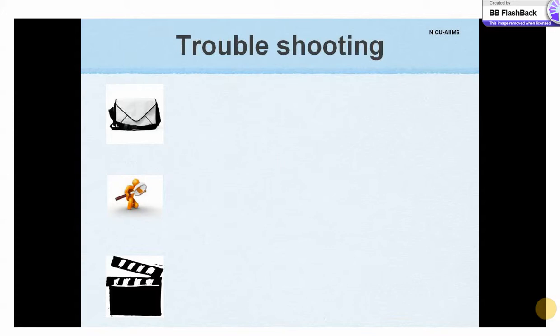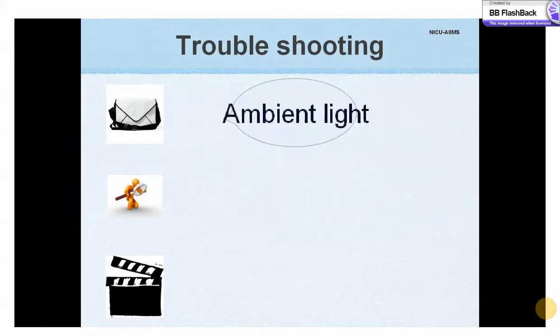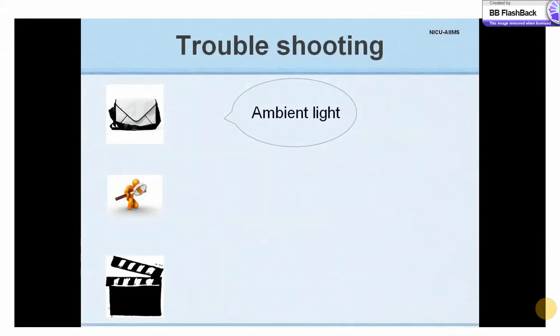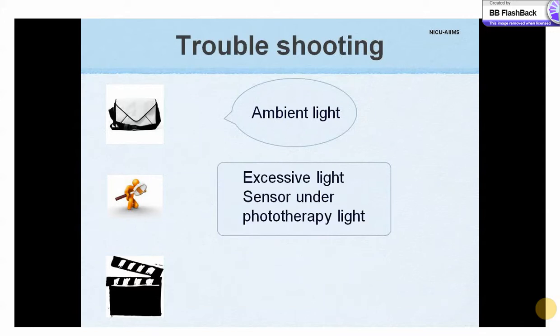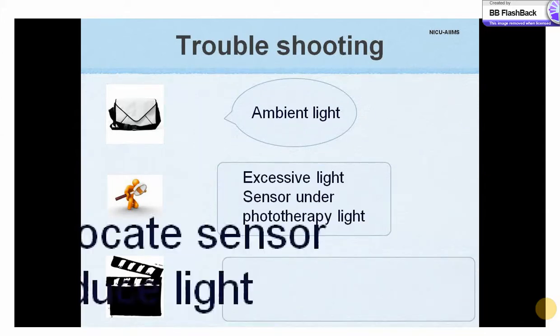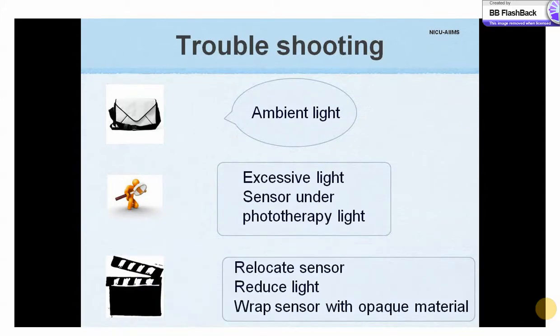Problems are anticipated while working with any equipment, and we should be able to fix them by analyzing the cause and finding a solution. If there is a message quoting ambient light, it means there is excess light shining on the sensor — relocate the sensor to a more shielded site or reduce the amount of light. If the baby is under phototherapy, the sensor must be wrapped with an opaque cloth or carbon paper.